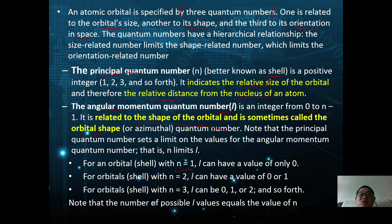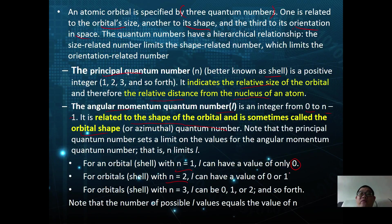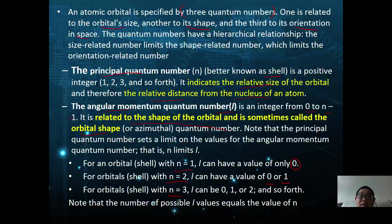For example, in the first shell where n equals 1, l equals n minus 1, so l equals zero — meaning there is only one type of orbital. For the second shell, n equals 2, so l can be 0 or 1 — giving two types of orbital shapes. For the third shell, n equals 3, so l can be 0, 1, or 2. Note that the number of possible l values equals the value of n.